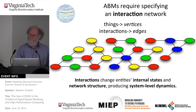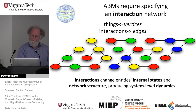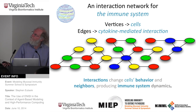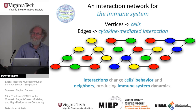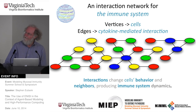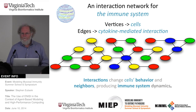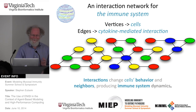This is for a general agent-based model. For an agent-based model of the immune system, you can choose cells to be the interacting things, and cytokine-mediated interactions to be what the edges represent. The interactions change the cell's state and can change the network itself, and all that together produces the dynamics of the immune system — if you've got the parameters right, the interaction rules right, and everything calibrated.